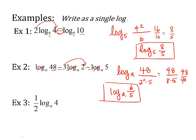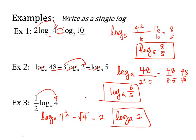Number 3, log base, or 1 half log base a of 4. Well, this is really just one term. So it's the log base a of 4, and that 1 half was a power. But remember, that 1 half means the square root of 4, which we know is 2. So this is really the log base a of 2. If you can simplify it, you should.